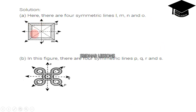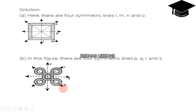For question A, there are four symmetric lines: line L, line M, line N, and line O. So here we have four symmetrical lines. And for picture B, in this picture also there are four symmetrical lines: line P, line Q, line R, and line S.